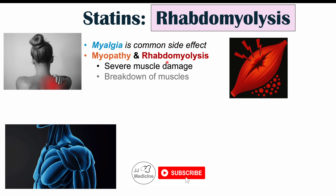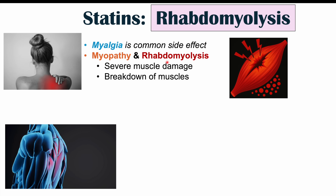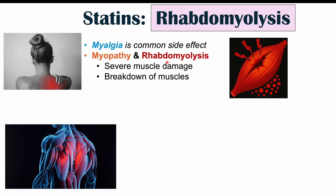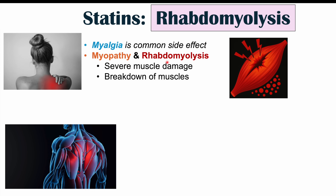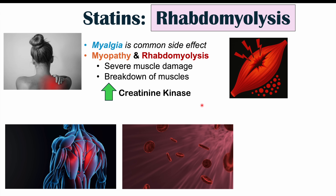Rhabdomyolysis is more severe in the sense that it leads to a major breakdown of muscle — where muscles essentially rupture, releasing myoglobin. Myoglobin is contained in muscles but is not supposed to be outside of them. With myopathy and rhabdomyolysis, we can get increased creatine kinase, which we would not see with myalgia. When muscles break down, as in rhabdomyolysis, we get an increase in creatine kinase and a release of myoglobin.